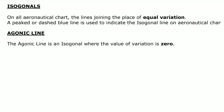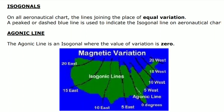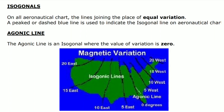On all aeronautical charts, the line joining places of equal variation is called an isogonal. A pink or dashed blue line is used to indicate isogonal lines on aeronautical charts. You can see in the picture lines labeled 20° east, 15° east, 10° east — any place on the same isogonal has the same variation. The agonic line is an isogonal where the value of variation is zero. In every DGCA exam there are one or two questions on isogonals or agonic lines, so remember: equal variation = isogonal; zero variation = agonic line.